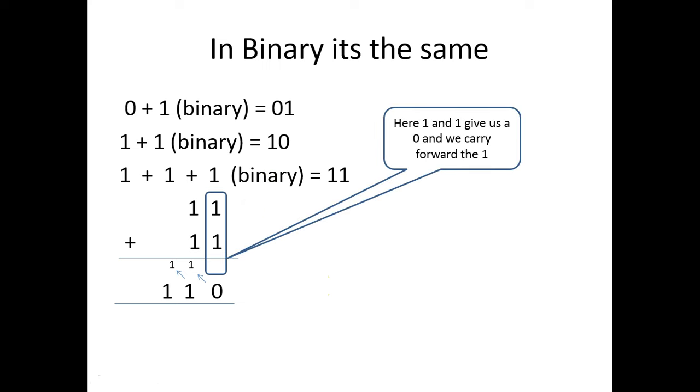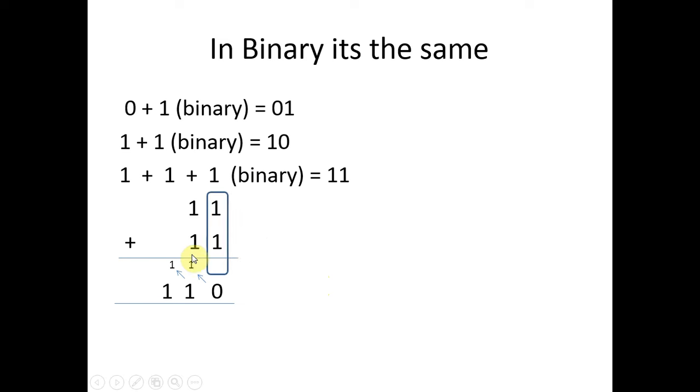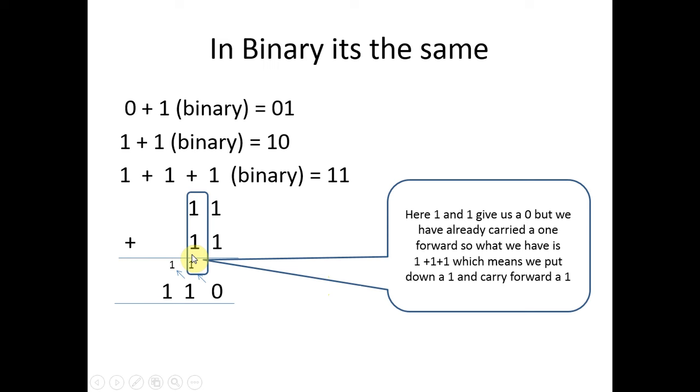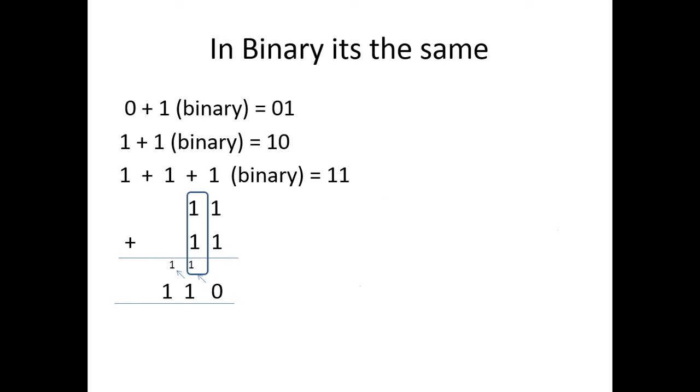So we look at the first bit. Here, we've got a 1 and 1. Well, that gives us a 0 with the carry forward. So there's our 0 and there's our carry forward. Here, we have 1, 1 and 1 now.